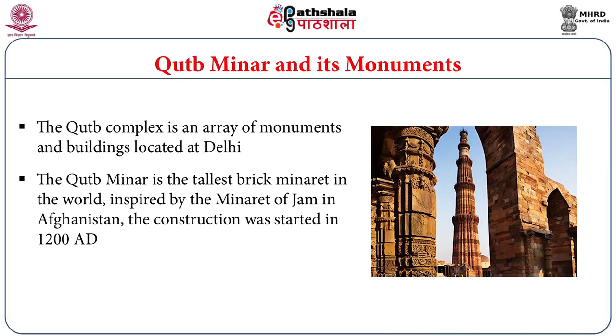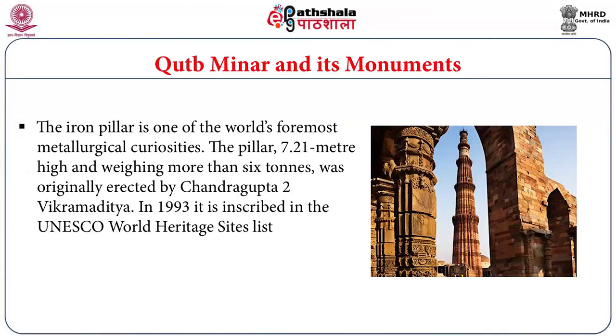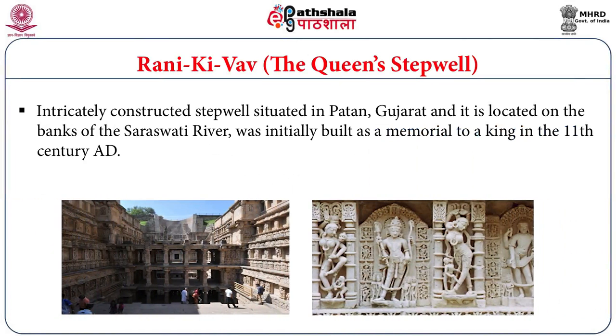The Qutub Minar and its monuments complex is an array of monuments and buildings located in the capital city of Delhi. The iron pillar is one of the world's foremost metallurgical curiosities, standing 7.2 meters in height and weighing more than 6 tons. It was originally erected by Chandragupta II Vikramaditya. In the year 1993, it was declared as a UNESCO World Heritage Site. Rani ki Vav is also a great example of architectural and art reflection in this step well.